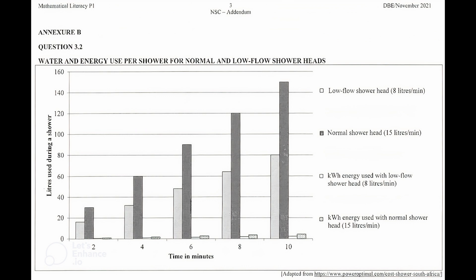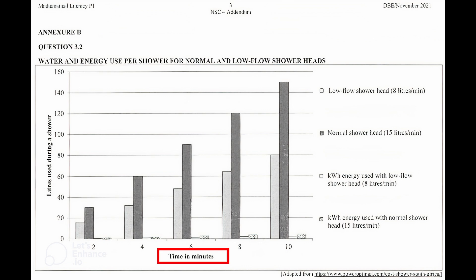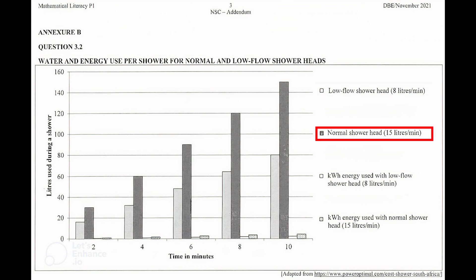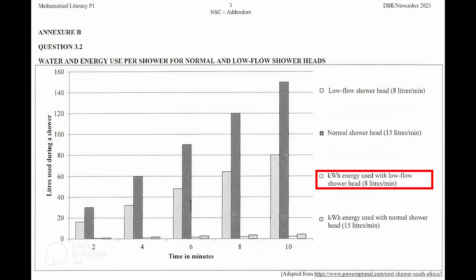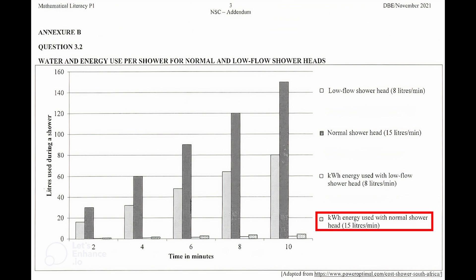The graph on Annexure B shows more detailed information on water and energy use per shower for a normal shower head and a low flow shower head. Analyzing the graph, the number of litres used is on the y-axis, the time in minutes per shower is on the x-axis, and the key shows the low flow shower head, normal shower head, kilowatt-hour energy for low flow, and kilowatt-hour energy for the normal shower head. This is a grouped bar graph comparing the two shower heads and their respective energy consumptions for two, four, six, eight, and ten minutes of shower time.